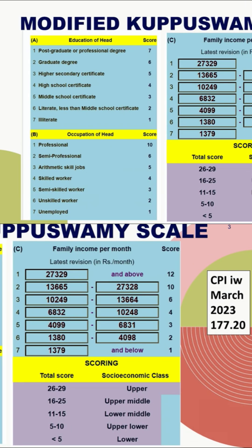This is about the modified Kuppuswamy scale. This socio-economic status scale classifies families based on income, occupation, and literacy. The mnemonic IOL — Income, Occupation, and Literacy — is useful to remember this. Each category has separate scores as given here.